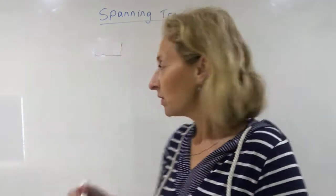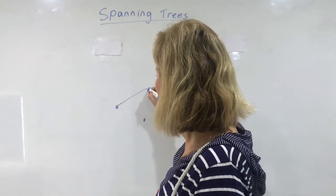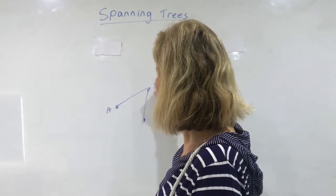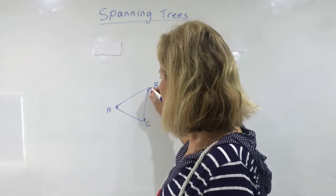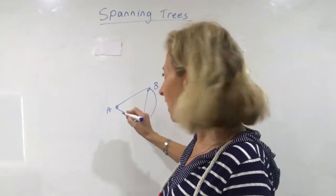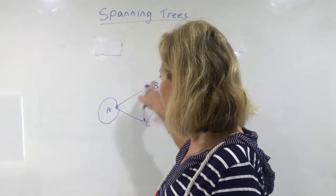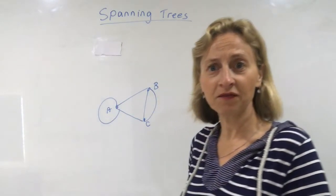Up until now we've drawn networks that have had more than one edge being able to connect the same vertices. For example, I could have had A, B and C and I might have drawn two edges connecting B and C or I might have had a loop at A connecting these different vertices.